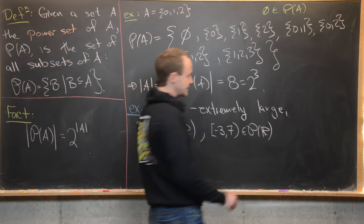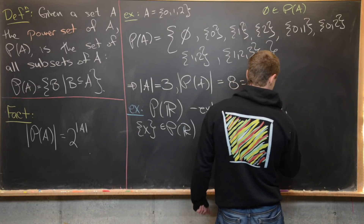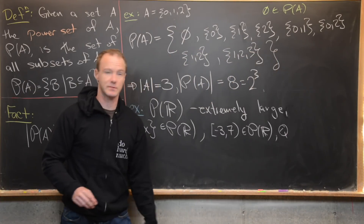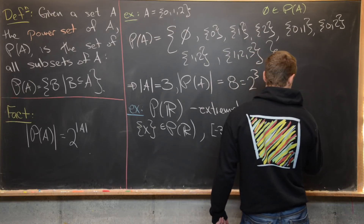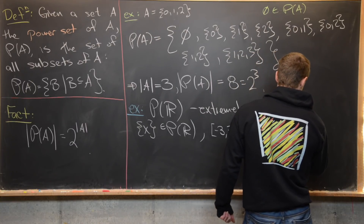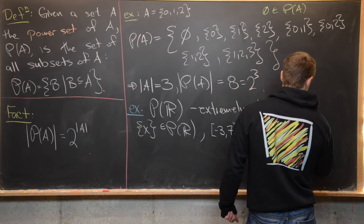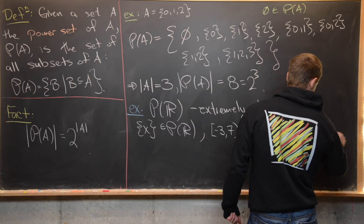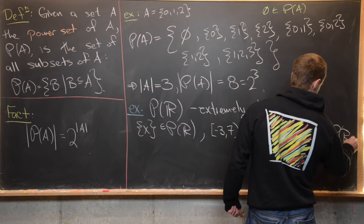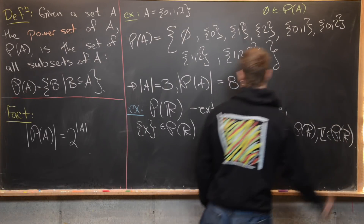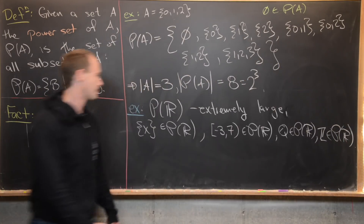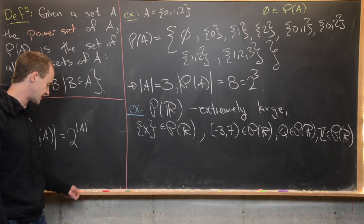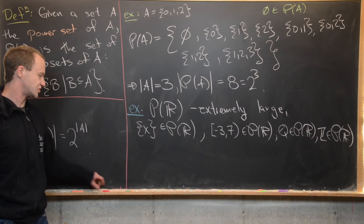Some other things are in P(ℝ) too: the rational numbers Q are definitely a subset of ℝ, so Q is in P(ℝ), and the integers Z are also a subset of ℝ, so Z is in P(ℝ) as well. So as I said, this is an extremely large set.